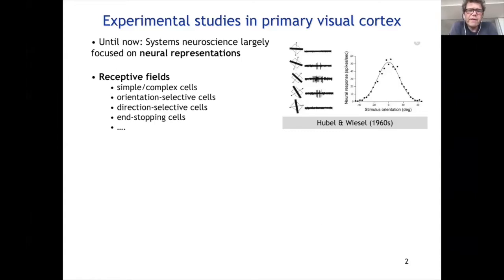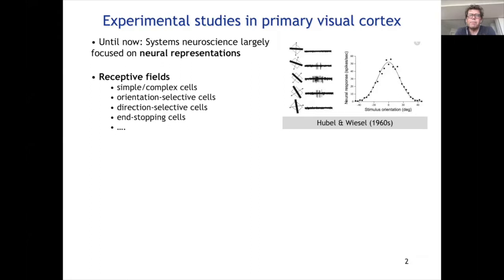If you look at the status in systems neuroscience, we have largely focused on neural representations. Particularly when it comes to the primary visual cortex — maybe the most studied piece of cortex — going back to the work of Hubel and Wiesel, we have mapped out all these receptive fields. We have all these different kinds of cells mapped out in V1: simple cells, orientation-selective cells, and so on.